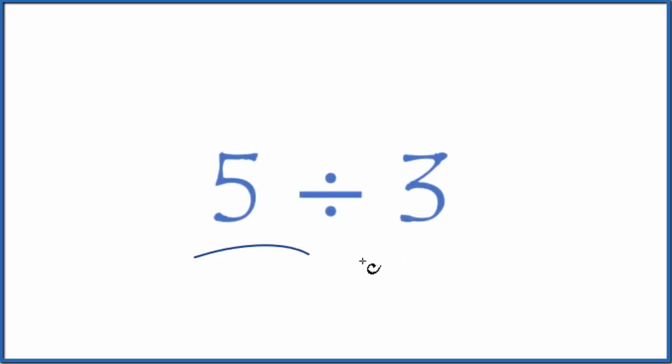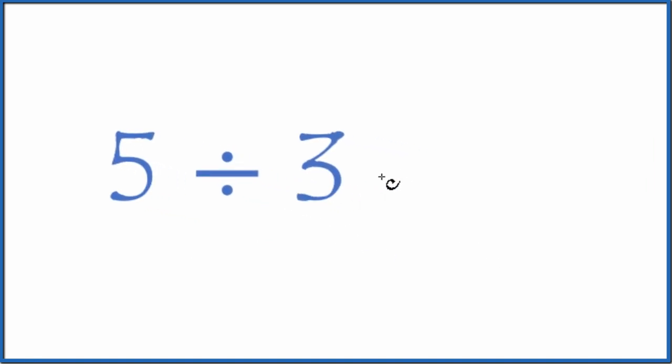In this video, we'll divide 5 by 3. One way to think about this is 5 divided by 3, that's the same as 5 over 3. So 5 divided by 3 equals the fraction 5 thirds.